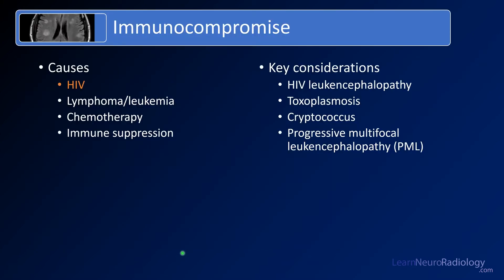Immunocompromised status is common. You'll most often see it in patients with HIV, although you have to think about other considerations like lymphoma or leukemia, patients on chemotherapy, or patients on immune suppression for other reasons. Common reasons include transplant and autoimmune diseases such as multiple sclerosis.